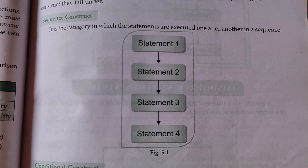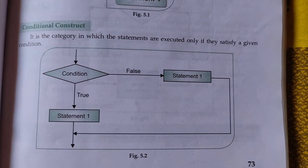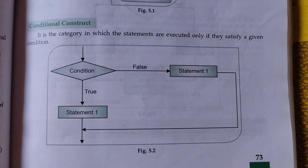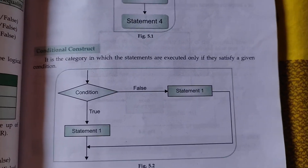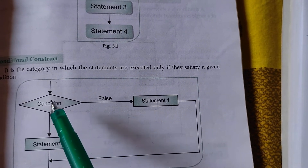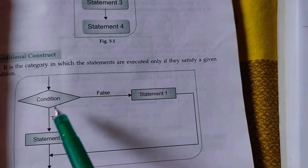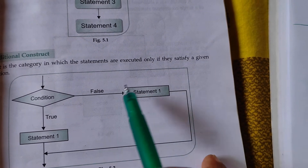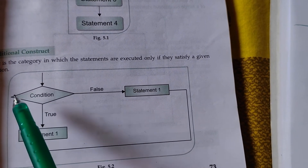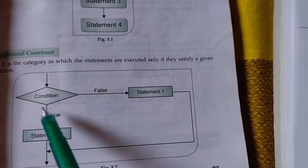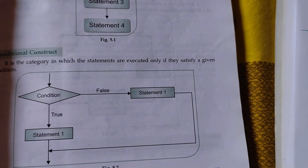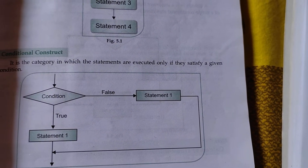That is called sequential construct. Next is conditional construct. It is the category in which statements are executed only if they satisfy a given condition. If the condition is true, that block of statements will execute. If it is false, some other set of statements will execute. It depends entirely on the condition.